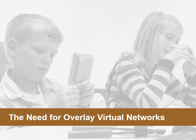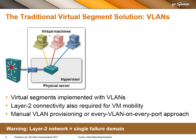Now with the problem being defined, let's see why VLANs wouldn't be good enough. Traditionally we are solving these problems with VLANs — we would implement virtual segments with VLANs, and VLANs would immediately provide layer 2 connectivity that we need for VM mobility.